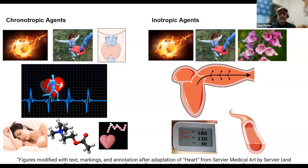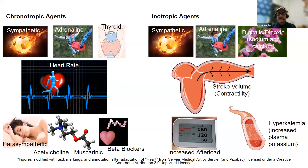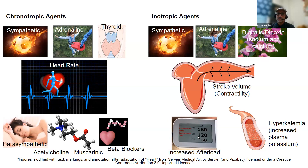Now let's look at it with the labels. Chronotropic agents increasing heart rate: sympathetic nervous system, adrenaline, thyroid hormone. Chronotropic agents reducing heart rate: parasympathetic nervous system, acetylcholine binding to muscarinic receptors, beta blockers interfering with adrenaline binding to adrenergic receptors. Inotropic agents increasing stroke volume and/or contractility: sympathetic nervous system, adrenaline, digitalis or digoxin — digoxin works through an increase in intracellular sodium causing an increase in calcium, thus increasing contractility. Increased afterload through systemic hypertension reduces stroke volume but eventually results in increased contractility. Hyperkalemia — increased plasma potassium — reduces contractility of the muscle.